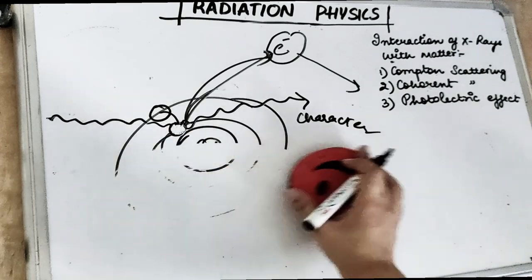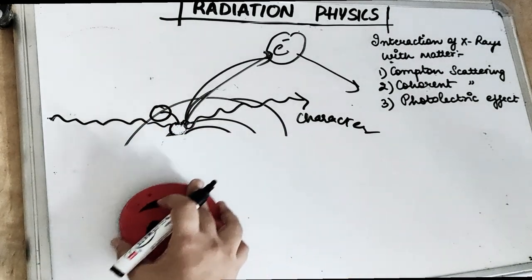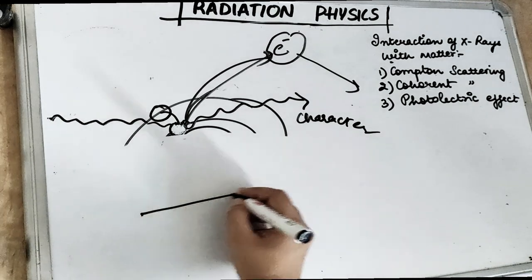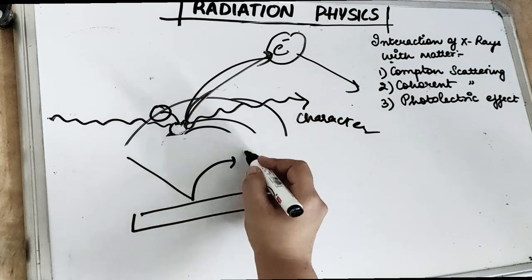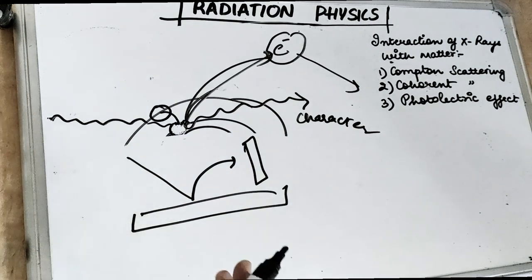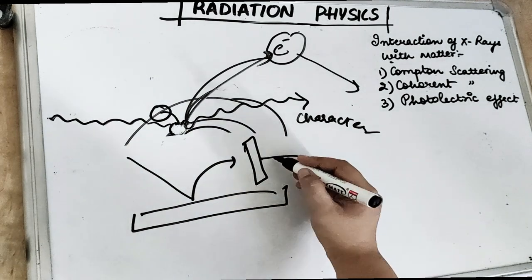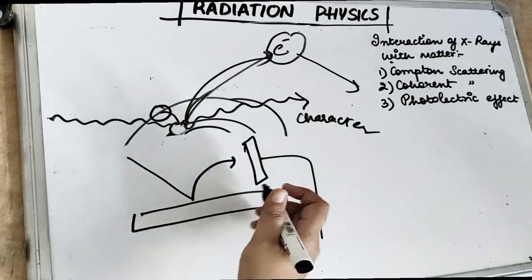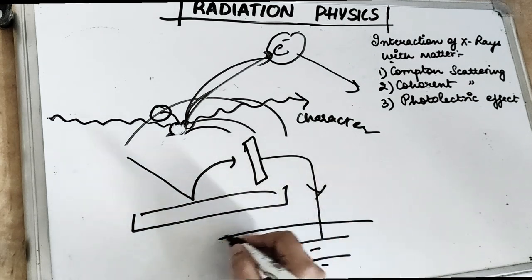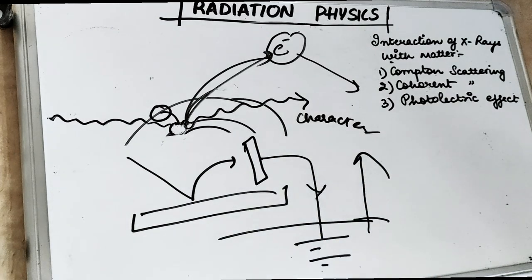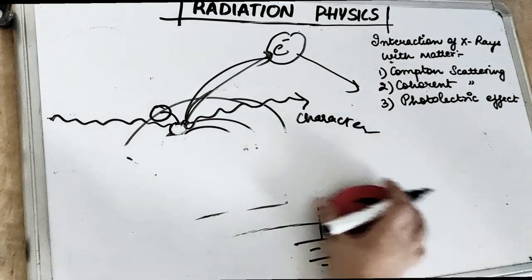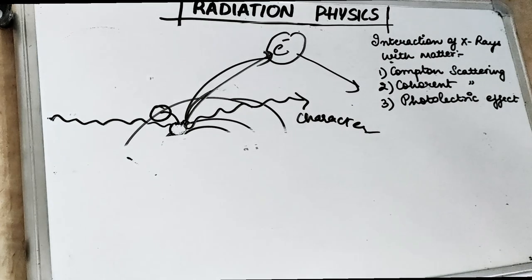The photoelectric effect is similar to what we studied in 12th standard: a metallic surface exposed to incident rays causes photoelectrons to come out. We've now covered all three interactions of x-rays with matter: Compton scattering, coherent scattering, and the photoelectric effect.